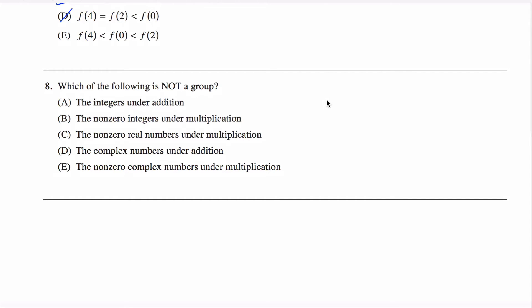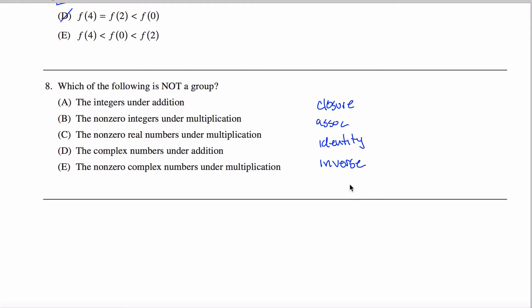What you need to know are the axioms that make a set a group. Those axioms are closure, associativity, an identity element, and an inverse element — every element needs an inverse element. I'm going to talk about each of these four things for each of the five listed sets A, B, C, D, and E, and we'll see which one fails and why the rest do not fail.